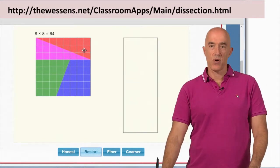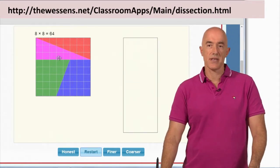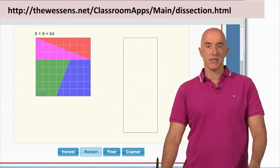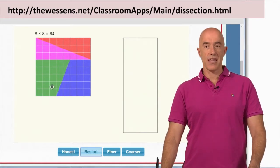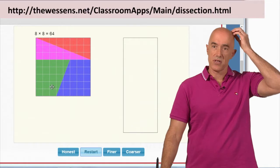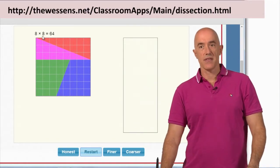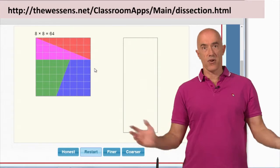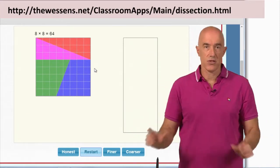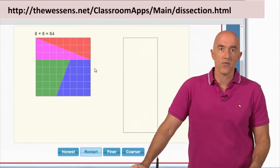We start with a square. This is eight by eight, so there's eight rows and eight columns of these little white squares here. And we take this square which has an area of 64 if each area is a unit of one.